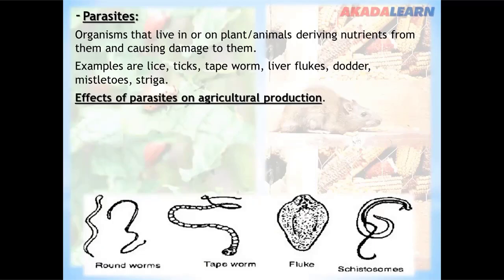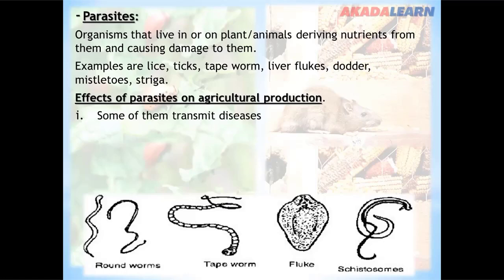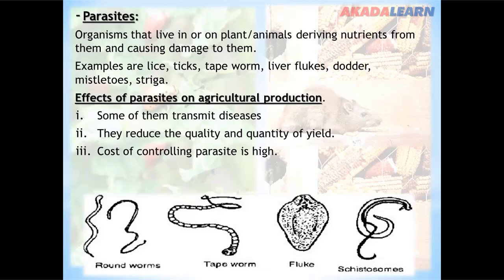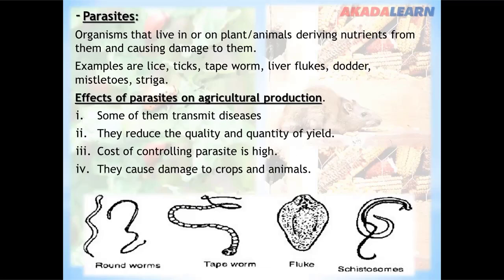The effects of parasites on agricultural production include: transmission of diseases; they reduce quality and quantity of yield; the cost of controlling parasites is high; they cause damage to crops and animals; and they reduce farmers' income.